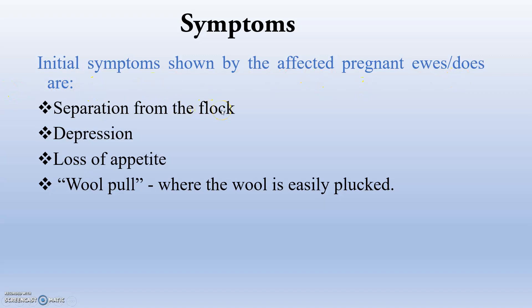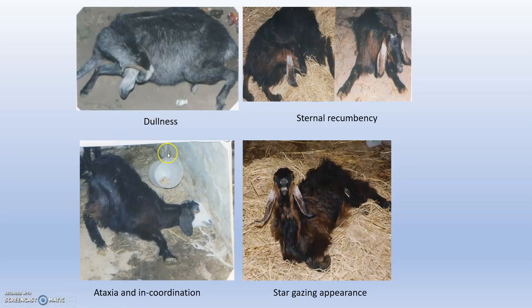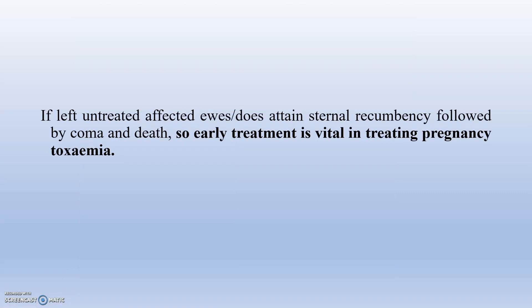Initial symptoms in affected pregnant ewes include separation from the flock, depressed appetite, and wool pull condition due to poor coat quality. Lethargy, deep grinding and champing of the jaws, muscle twitching and tremors, frothing at the mouth, and stargazing appearance are observed. Affected ewes walk aimlessly due to poor muscle control from CNS hypoglycemia, with ataxia and blindness. If left untreated, they progress to sternal recumbency, coma, and death.